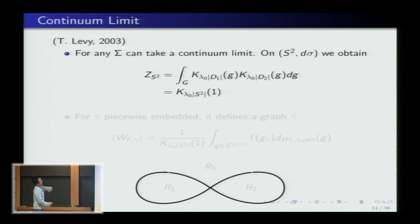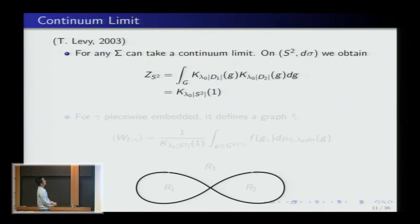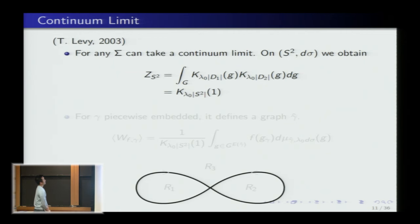To compute the partition function on S², just divide S² into two disks. Since the answer doesn't depend on further subdivisions, you can stop there. Doing the integral over the shared boundary edge: by symmetry — inversion is an isometry on the gauge group, so g and g-inverse give the same heat kernel — you just convolve and get the heat kernel at the identity at time equal to the area of S². That's the exact partition function. You can do this for higher genus surfaces too and get a relatively nice answer.